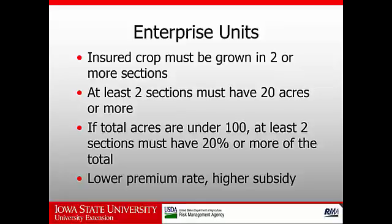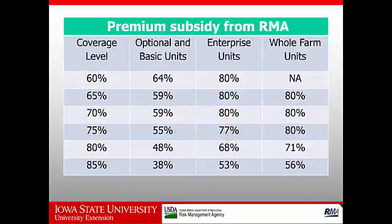Why might we want to combine parcels into enterprise units? The main reason is to spend less money — to lower the premium. The subsidies to crop insurance premiums from the risk management agency depend on the coverage level that we choose and the type of units that we choose. Looking at the left-hand column, our coverage levels can vary from 60% up to 85% of the expected revenue from the crop. As we increase that coverage level, the percent of the premium paid by the USDA goes down.